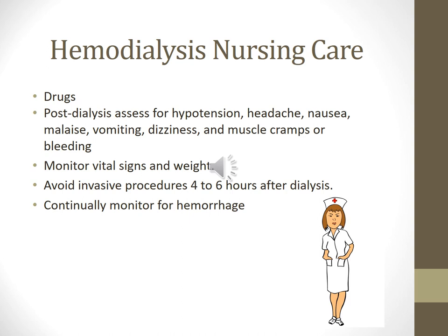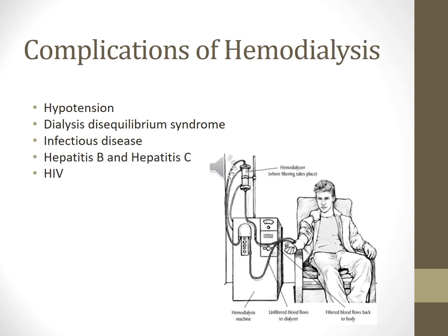Complications continued: Dialysis disequilibrium syndrome occurs with rapid decrease in fluid volume and BUN levels during dialysis. Patients will have nausea, vomiting, headaches, and fatigue; severe cases produce mental status changes or seizure — have Dilantin ready. If a patient develops a low-grade temperature after dialysis this is normal due to warming of blood, but if fever exceeds 101°F, notify the doctor immediately and obtain blood cultures. Monitor sodium levels. Infectious disease risks include HIV and hepatitis B and C from blood transfusions, though these are closely monitored.